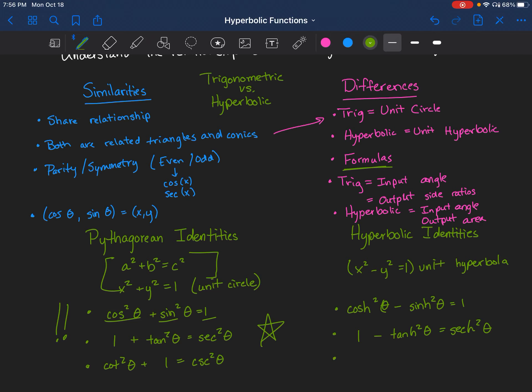Now, order does matter. So cosine has to go first versus sine, one minus tanch. And the other one is going to be the hyperbolic cotangent minus one equals hyperbolic cosecant squared.